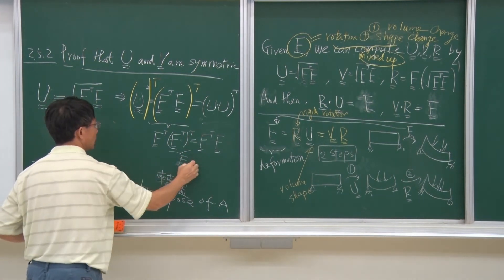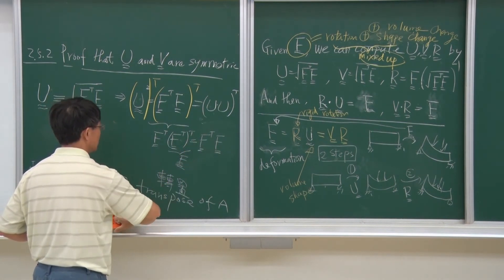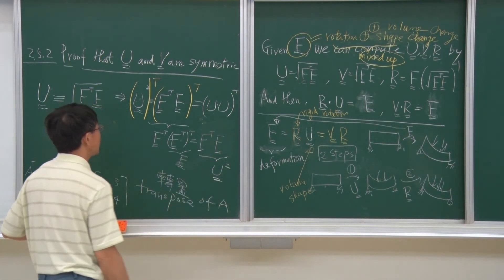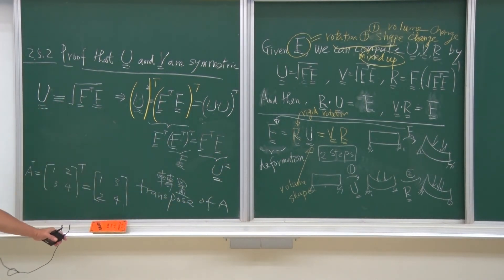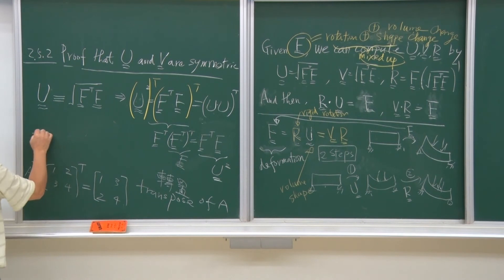But now, this one, by definition, is U square, right? U square defined in this way, U square. So, as a result, we have proved that.